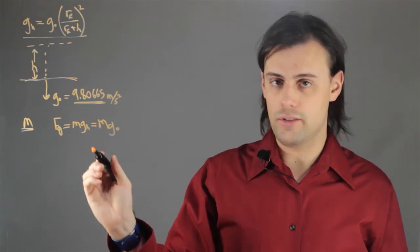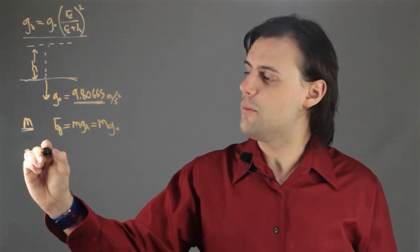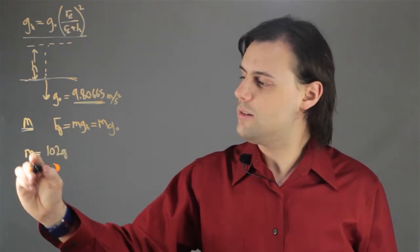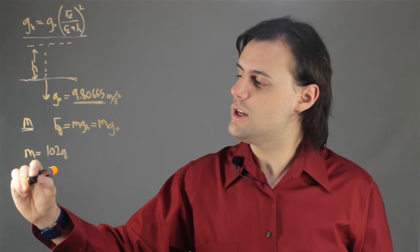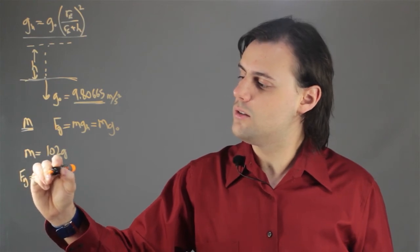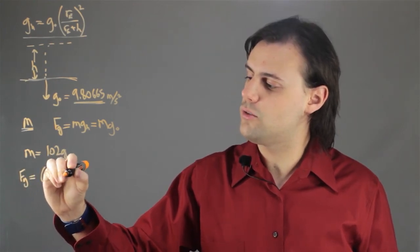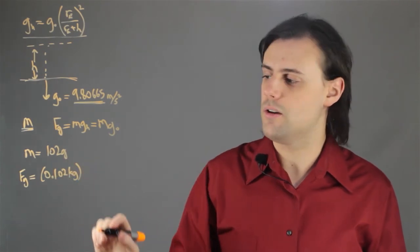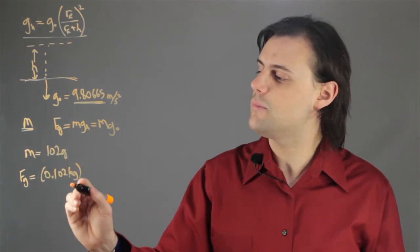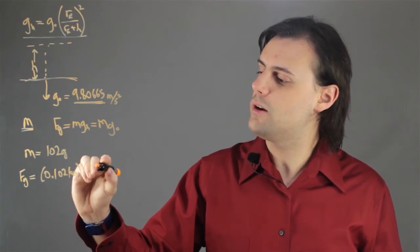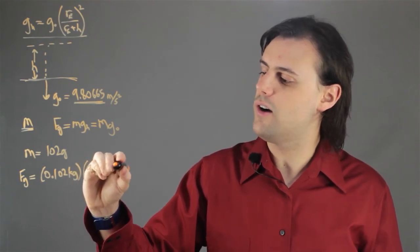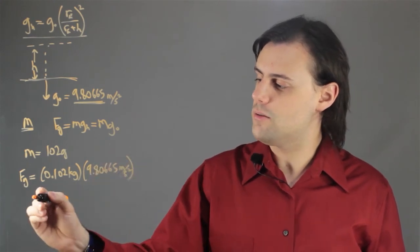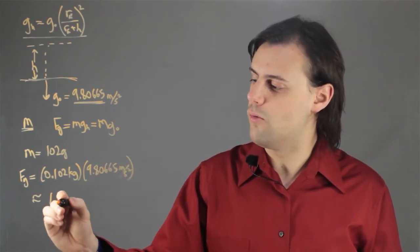So as an example, if the mass is equal to 102 grams, the weight, Fg, will be equal to 0.102 kilograms — to use the MKS units of the SI system — times 9.80665 meters per second squared, and this value gives us approximately 1 newton.